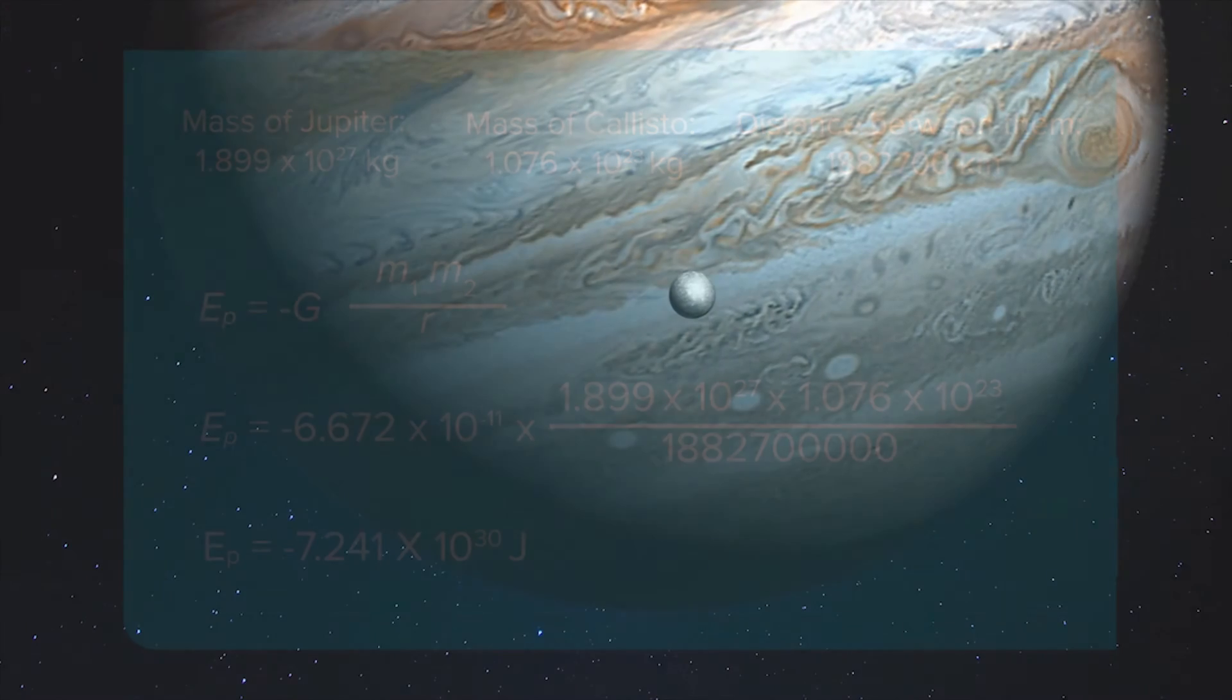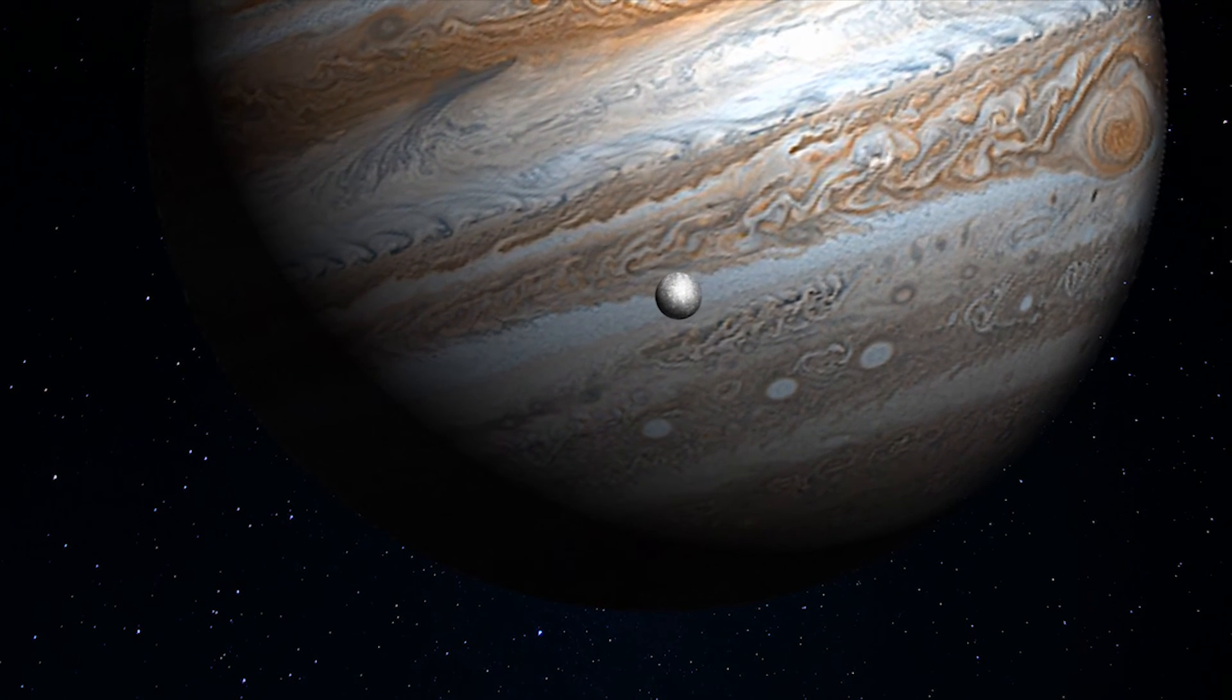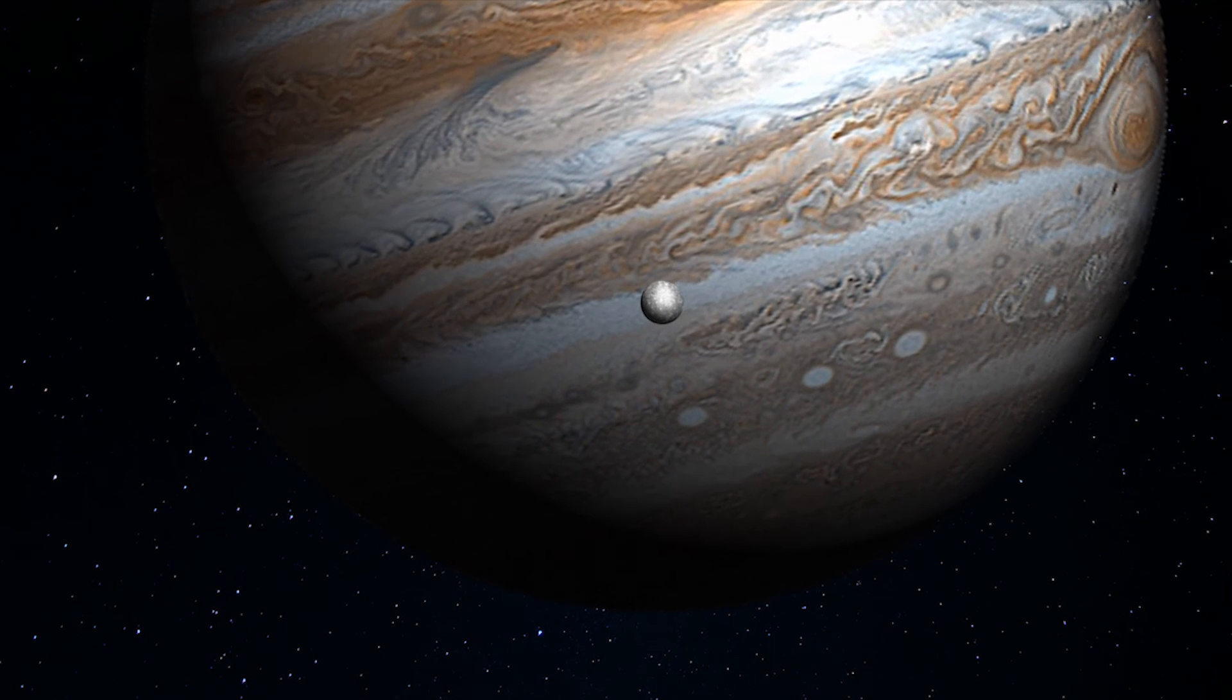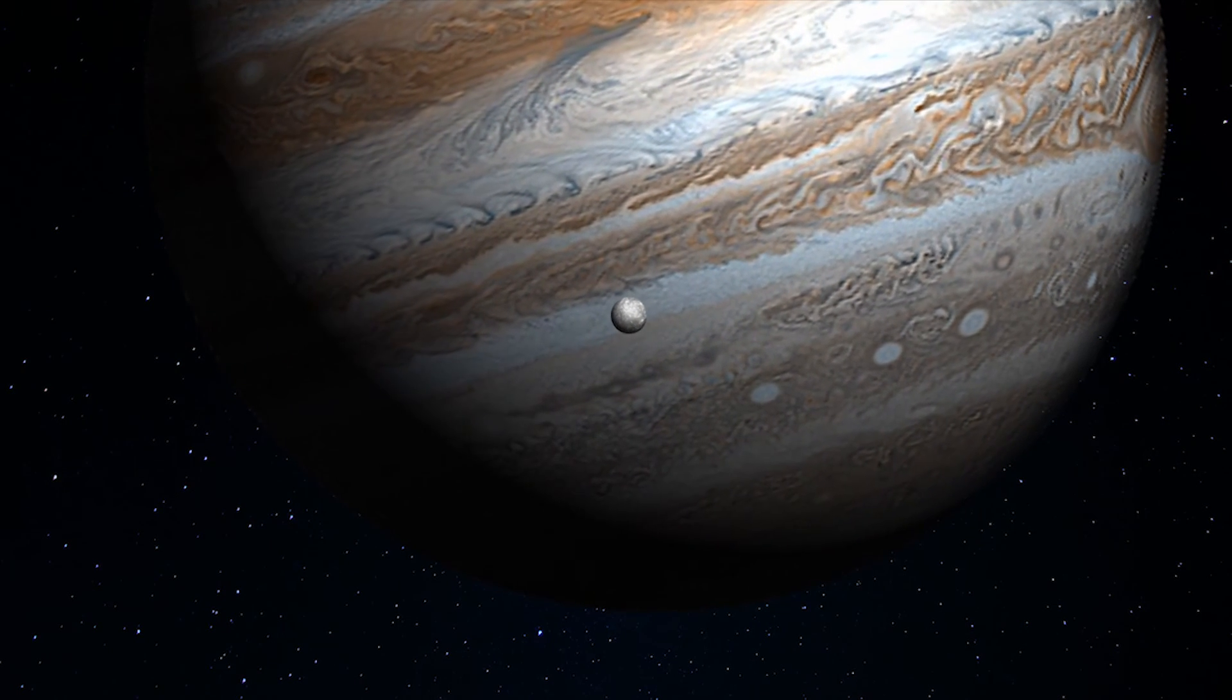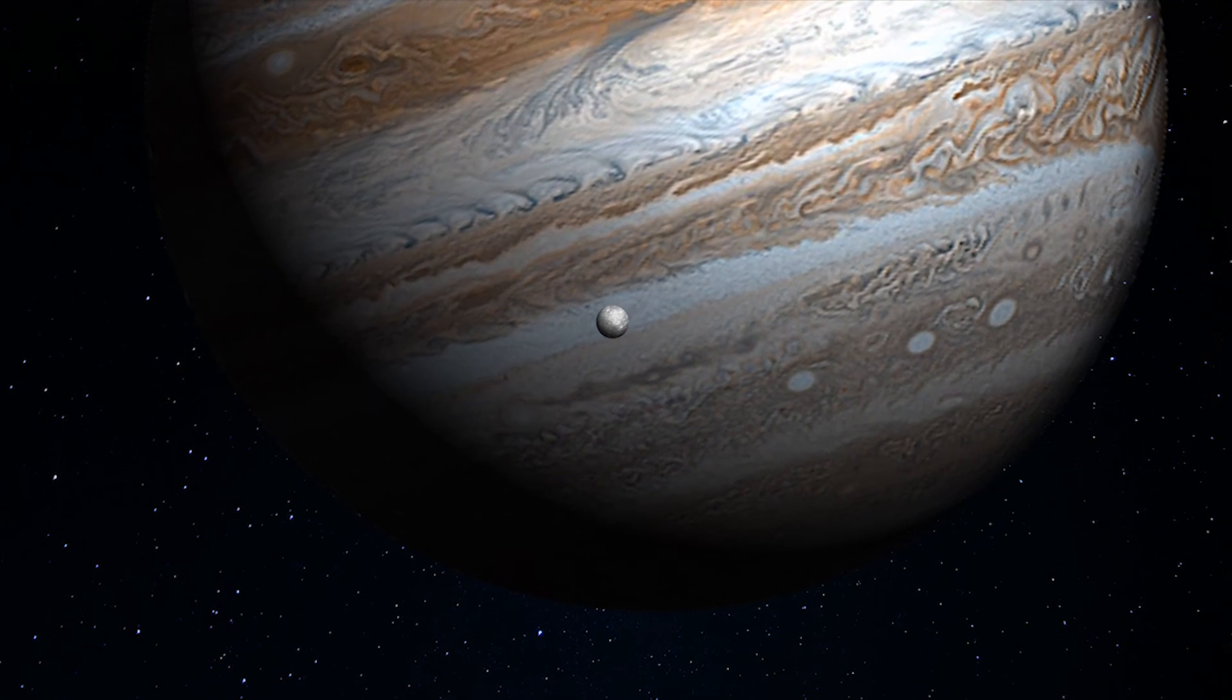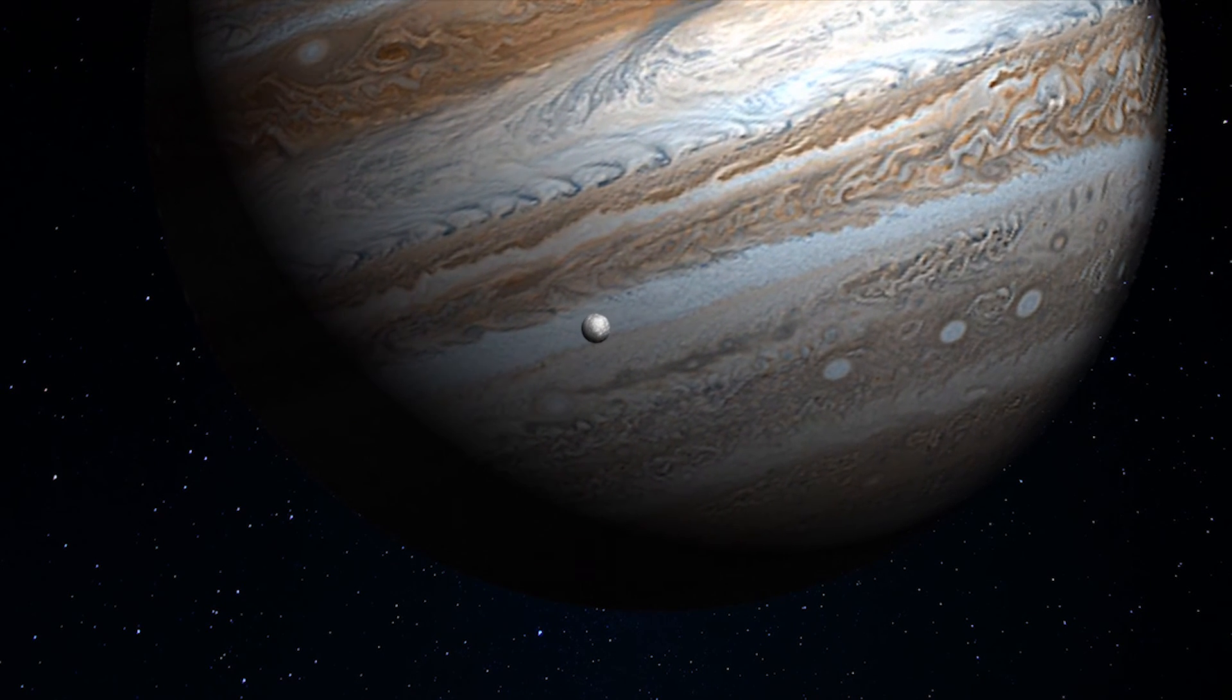If Callisto were moved closer to Jupiter, the difference in the gravitational potential energy calculated in its current position and the new position would reveal this.